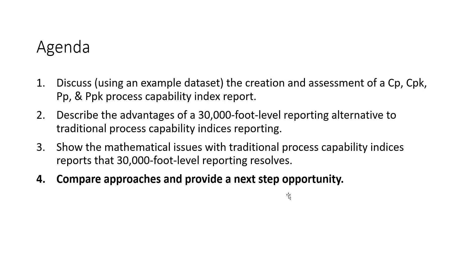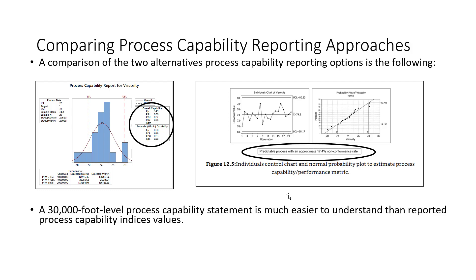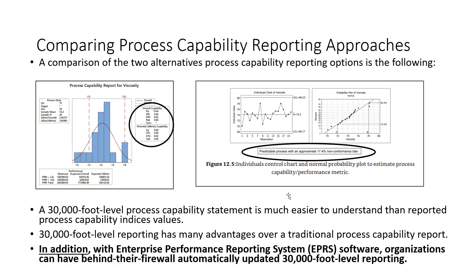The final topic for this session is to compare the approaches I've been discussing and provide a next-step opportunity. Traditional process capability is shown on the left-hand side of the slide, and on the right-hand side is the 30,000-foot-level alternative. The 30,000-foot-level statement is a lot easier to understand than process capability indices, and 30,000-foot-level reporting has many advantages over the traditional report. In addition, organizations can have behind-the-firewall software that automatically updates 30,000-foot-level reporting through enterprise reporting system software — EPRS software.